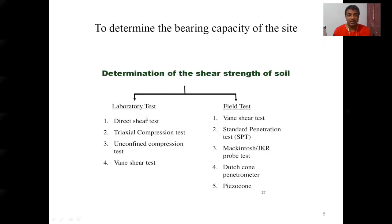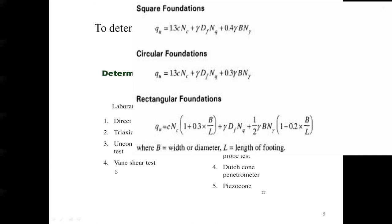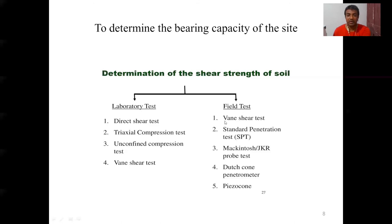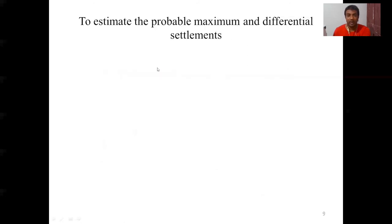The next objective is to determine the bearing capacity of the soil. Bearing capacity can be calculated by laboratory tests and field tests. The shear strength parameters — c (cohesion) and phi (angle of shearing resistance) — must first be known. From these two parameters, bearing capacity can be found using equations by Skempton, Terzaghi, and others. Field tests and correlations are also available to determine bearing capacity.